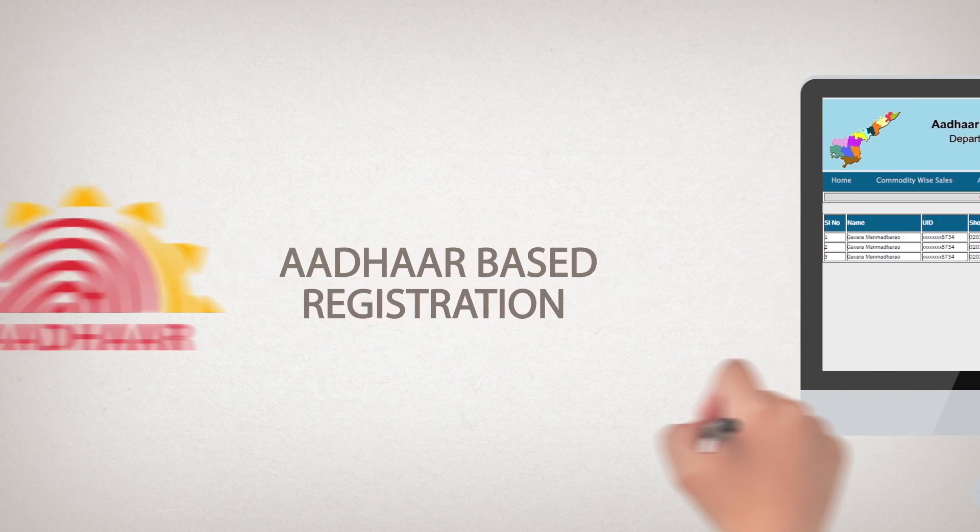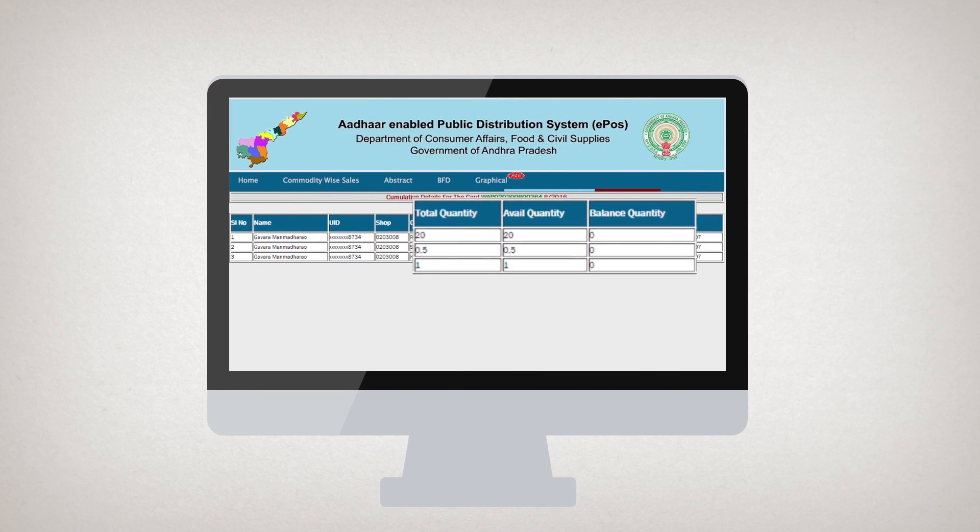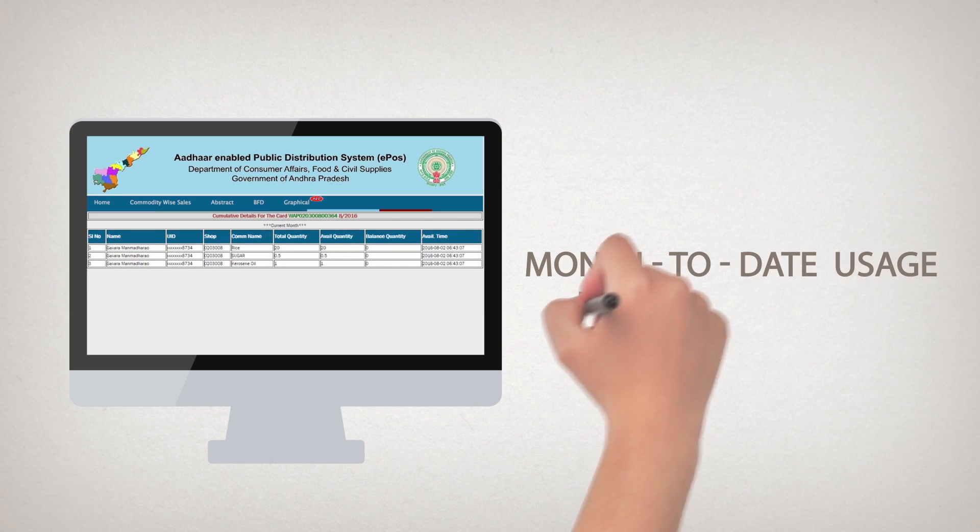Therefore, each fair-price shop in the district has complete information on the month-to-date commodity usage by any beneficiary.